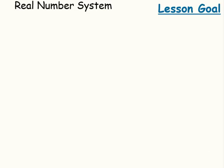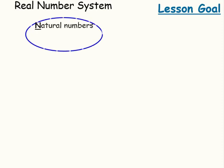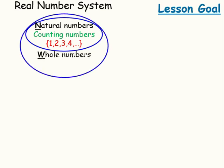In our lesson today, we'll be dealing with the real number system. Natural numbers are counting numbers that start with 1, 2, 3, 4, and so on. Whole numbers have an extra number in that group: 0. So we begin at 0 and then continue 1, 2, 3, and 4.